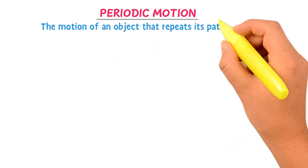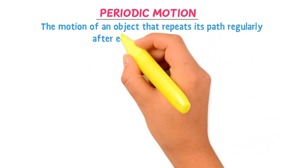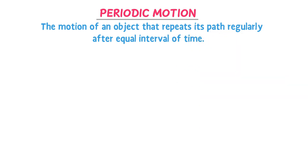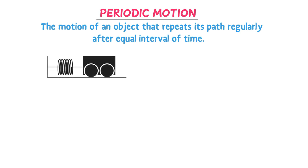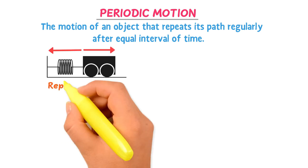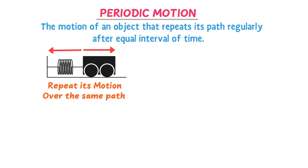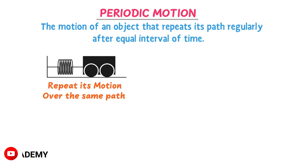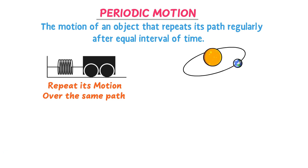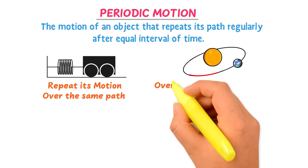Firstly, understanding the concept of periodic motion. The motion of an object that repeats its path regularly after equal intervals of time is called periodic motion. For example, the motion of a mass attached to an elastic spring — this mass repeats its back and forth motion over the same path after equal intervals of time, so it is in periodic motion.